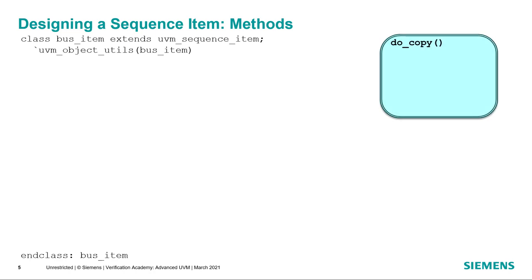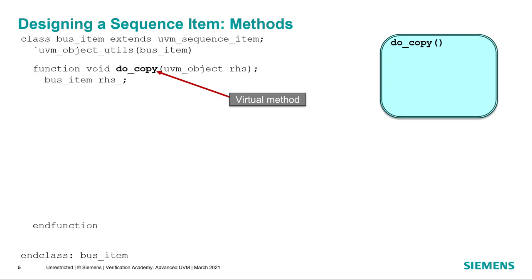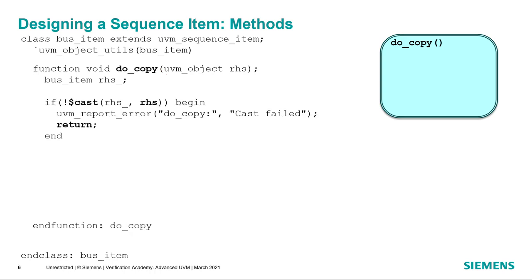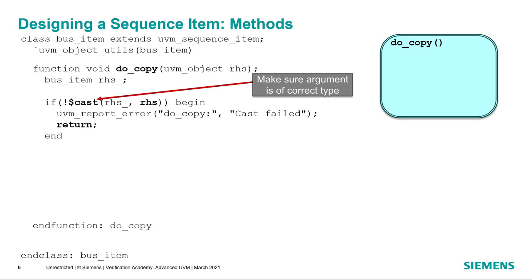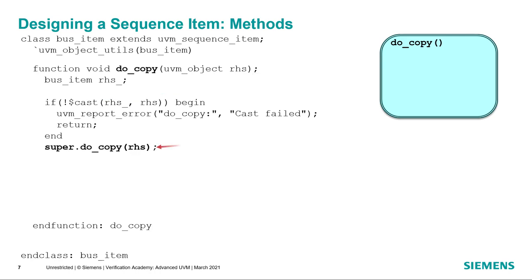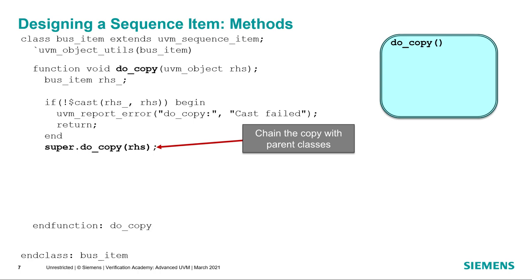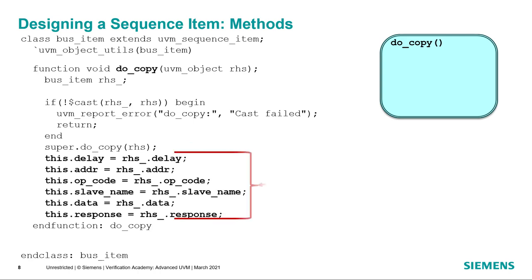The doCopy method is responsible for copying the contents of one transaction to another. We define doCopy as a virtual method. It takes as its argument the transaction from which we're going to copy — we call that the right-hand side, or RHS. The first thing we do is cast that argument to a transaction of the appropriate type we're expecting. If that cast is unsuccessful, it means we've passed in an improper argument type, so we report an error and return. If it is the right type, we call super.doCopy so all contents of the base transaction are copied, then we assign all other fields of the right-hand side to the fields of the current transaction.